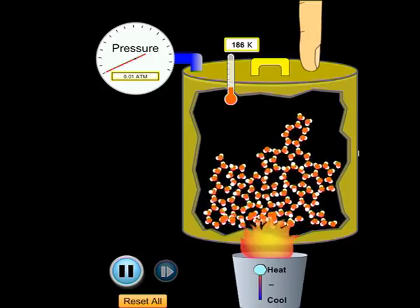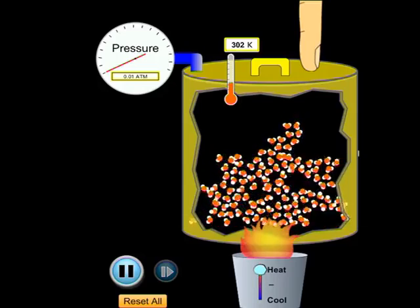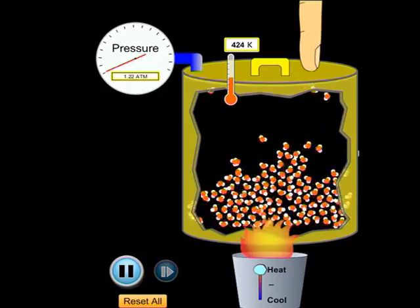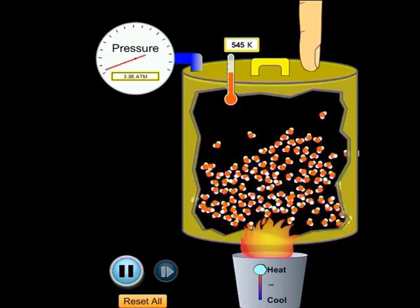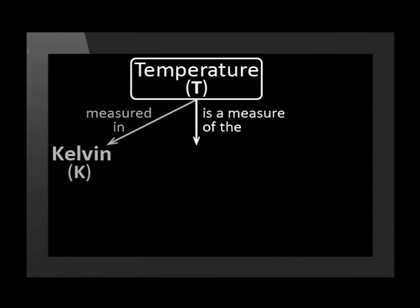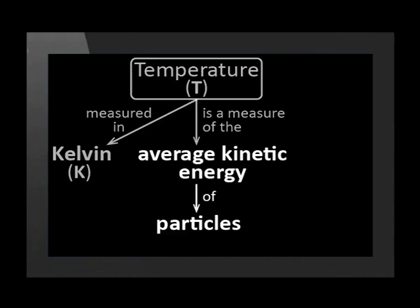We heat the gas. Notice that the thermometer reading rises. Also notice how the particles move around faster and faster. Remember that the speed of particles is related to their kinetic energy. Kinetic energy is energy of movement. The temperature of a substance is a measure of the average kinetic energy of the particles of the substance. Or to be more exact, of the molecules of the substance. Note that we need to say average kinetic energy because the molecules are not all moving at the same speed.